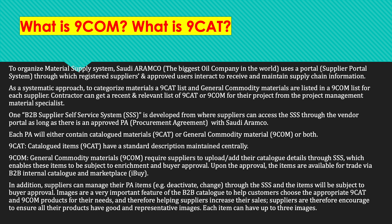Suppliers can manage their PA items, deactivate them, and change them through SSS, subject to buyer approval. Images are a very important feature of the B2B catalog to help customers choose the appropriate 9CAT or 9COM products, thereby helping suppliers increase their sales. Suppliers are encouraged to ensure all their products have good and representative images.